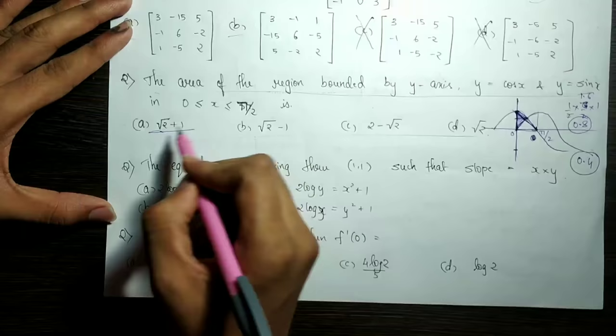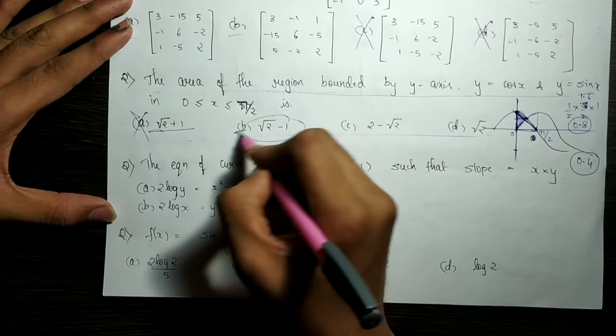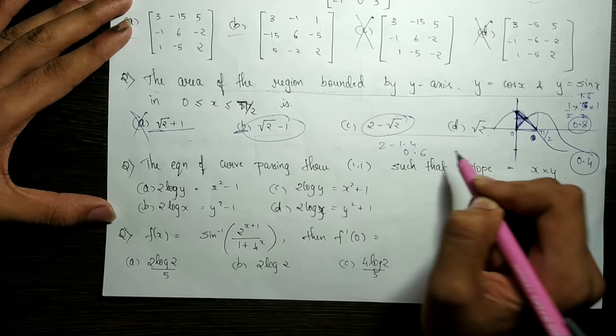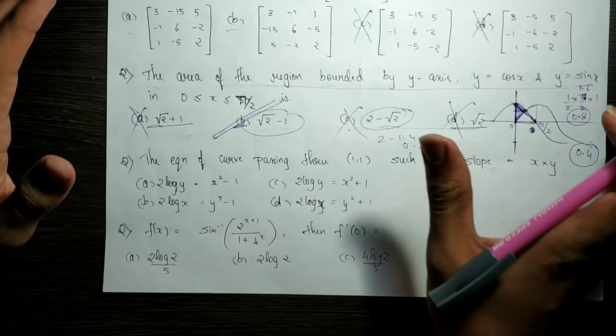Root 2 plus 1 is 1.4 plus 1, which gives 2.4 — not equal to 0.4. Root 2 minus 1 is 1.4 minus 1, which is 0.4 — correct. 2 minus root 2 minus 1.4 is equal to 0.6 — not correct. So root 2 minus 1 equals 0.4. If we are confused here, we will tend to get an error. We need to check the criterion technique and the right answer.